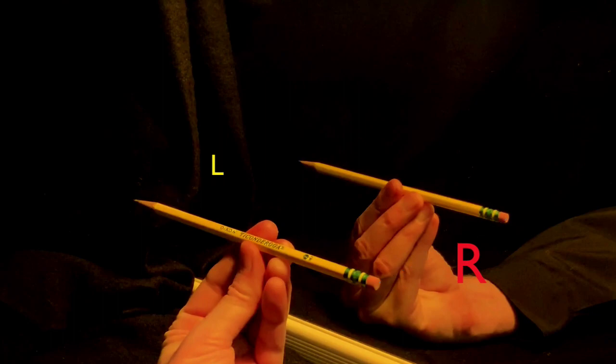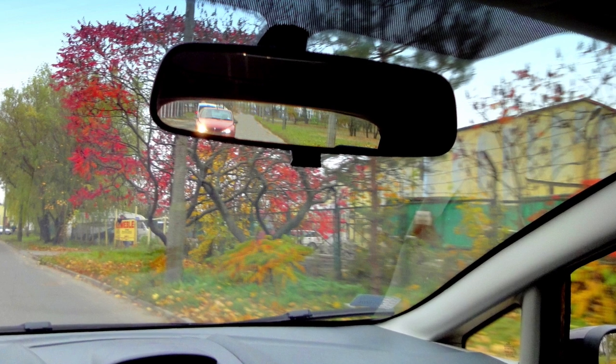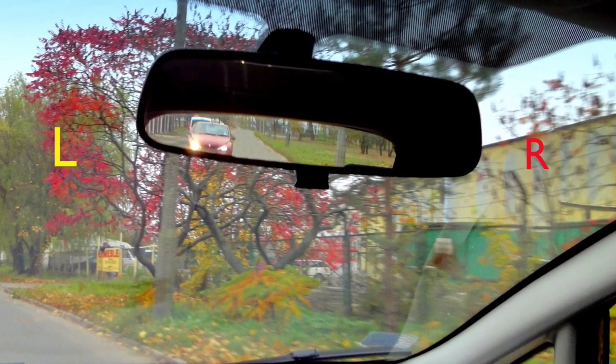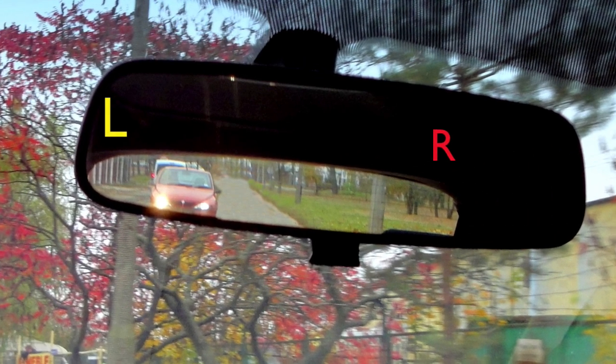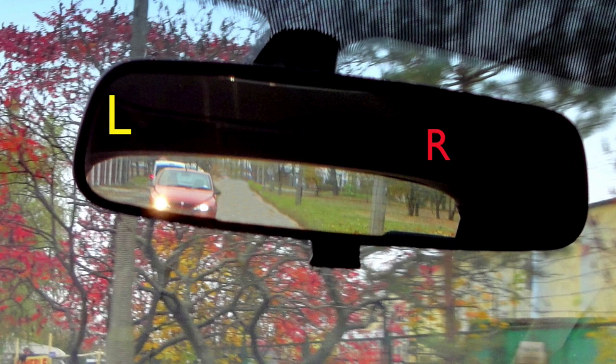And of course, this is super helpful when driving. Say there's a car approaching you on your left. Look into the rear-view mirror, and sure enough, you'll see in the mirror that the car is approaching you on the left. No inversion.